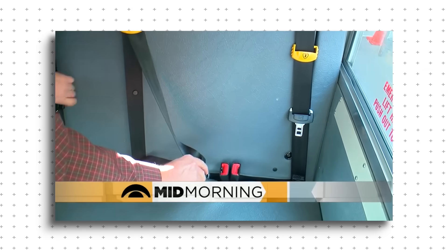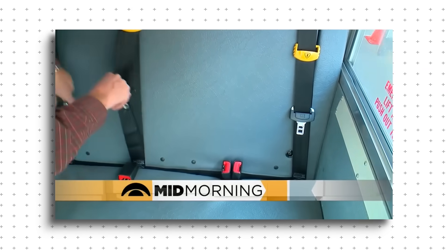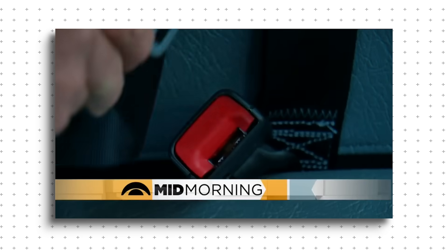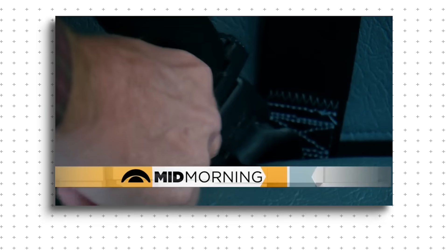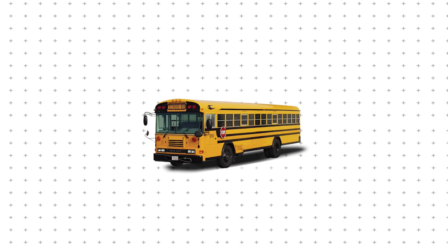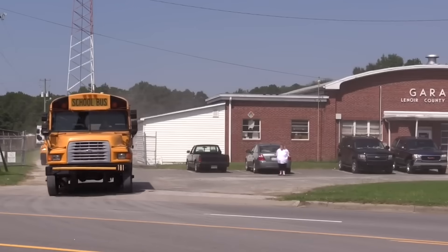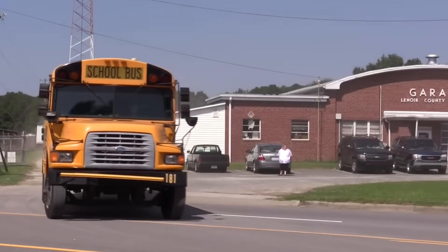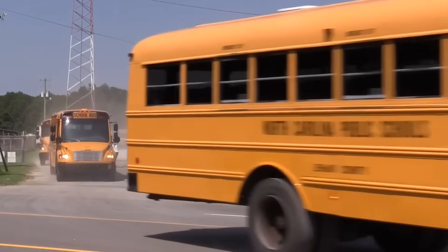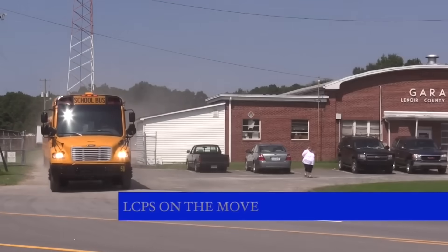School buses there are required to have seat belts, based on the idea that even with compartmentalization, restraints provide an extra layer of protection. Bus size and structure also vary depending on the country. In the U.S., school buses are large, high-capacity vehicles, built to transport dozens of students at once. But what about countries with different infrastructure?